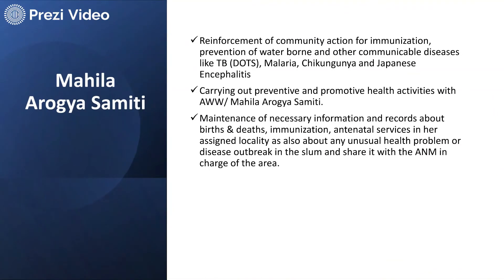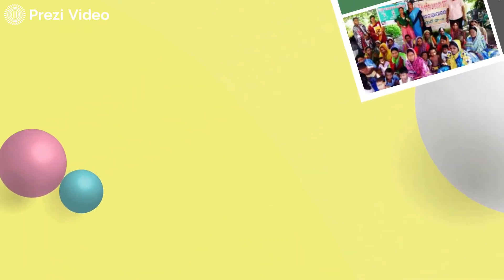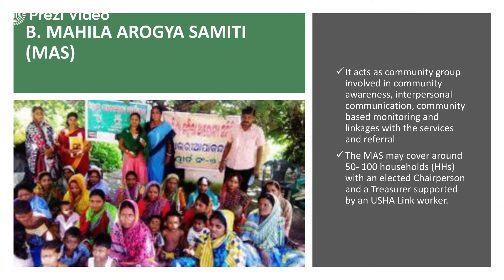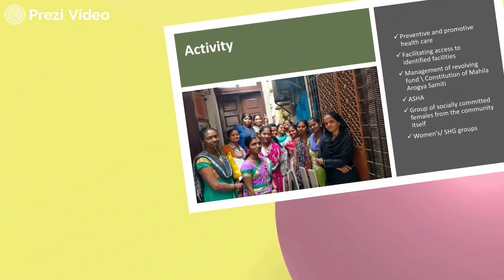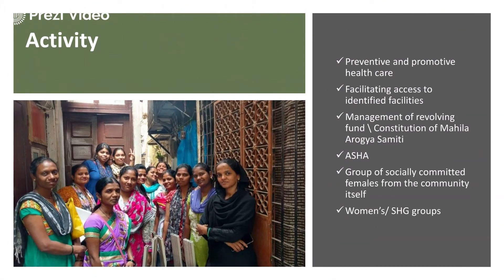Mahila Arogya Samitis, along with USHA workers, help provide necessary health information. Campaigns are organized, records are maintained, and various services like birth and death registration, immunizations, and antenatal services are provided to local areas. They organize community programs and awareness campaigns, along with monitoring and linkages with several services. Mahila Arogya Samitis cover around 50 to 100 households with an elected chairperson and treasurer, supported by USHA link workers, and have several preventive and promotive healthcare policies.